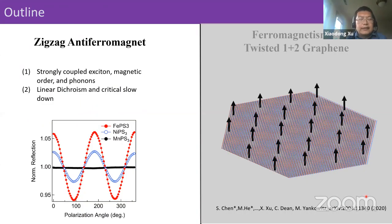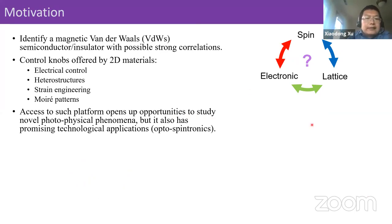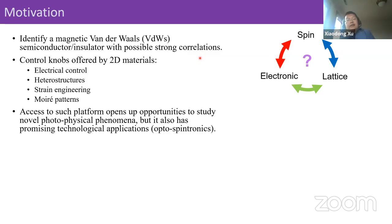Let's start from the zigzag antiferromagnet. The main motivation is to identify a magnetic semiconductor and insulator with possible strong correlations. Transition metal dichalcogenides are fascinating systems to study 2D optics — excitons and engineer all kinds of moiré patterns. For TMD systems, they're protected by time-reversal symmetries. The idea is: what if we can find a semiconductor insulator with time-reversal symmetry breaking to begin with? Then we can engineer even stronger interactions, giving us an opportunity to study, for example, fractional Chern physics.